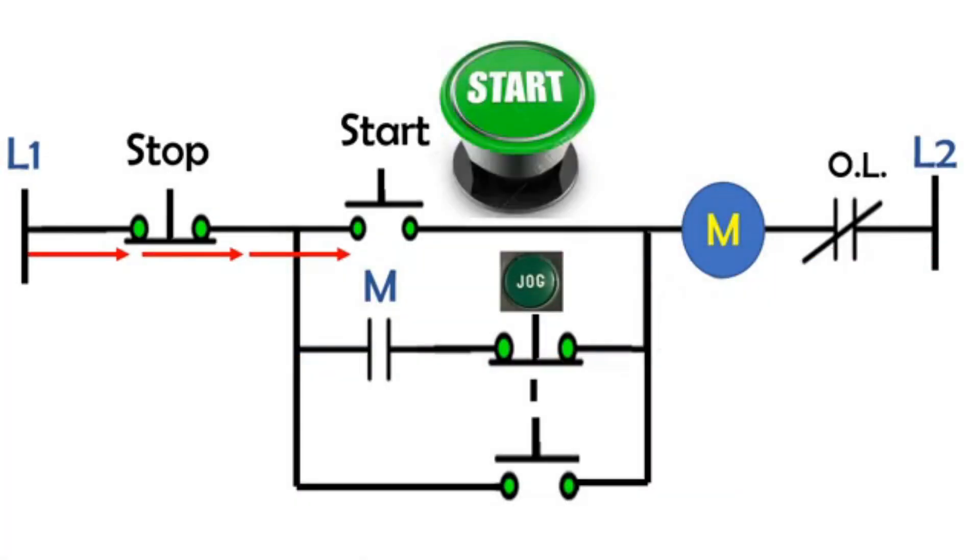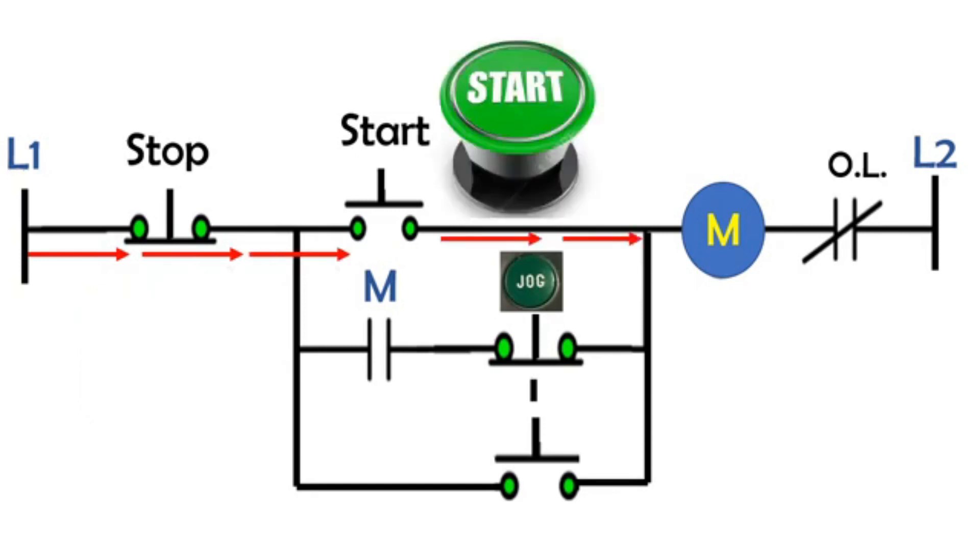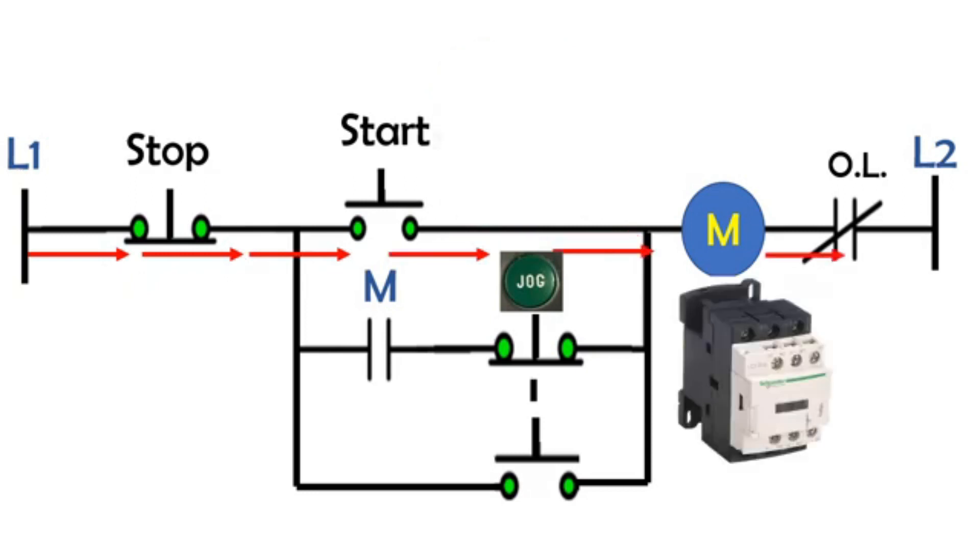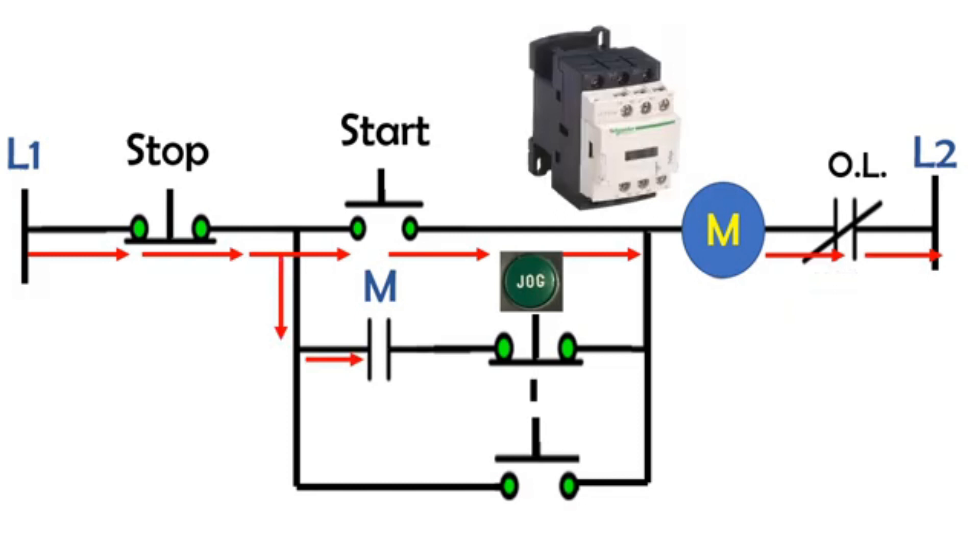When you press the start button, the current flows from line one, goes through the stop post button that is connected in series with a circuit, through the start post button that is connected in parallel, through the magnetic contactor overload relay, then back to the power supply line two. When the magnetic contactor is energized, the normally open contact which is our latching or sealing contact will close.